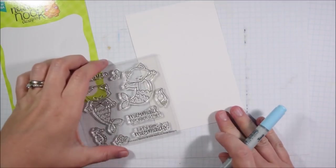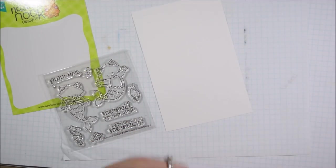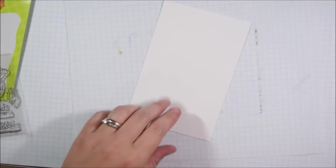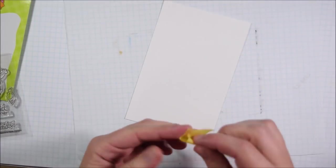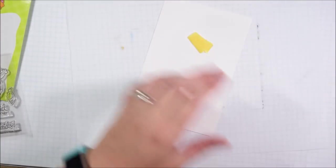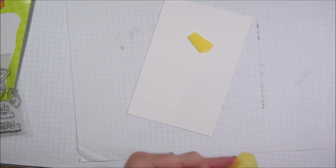To get started I wanted to create an ocean background for my mermaid Newton and I took a piece of 110 pound Recollection cardstock. It's what I like to use with my Copics although there's a couple cardstocks out there that are great.